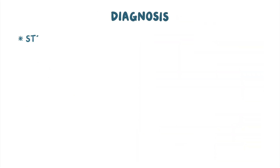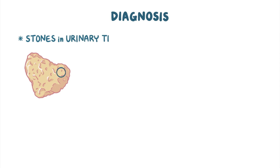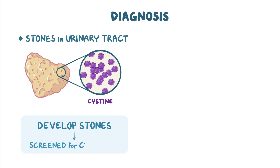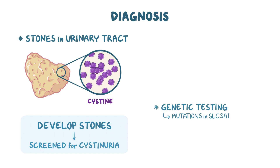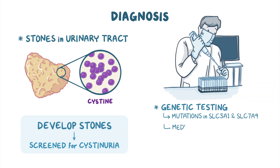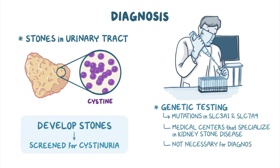A diagnosis is typically made based on finding stones in an individual's urinary tract that are made completely of cysteine, so individuals who develop stones are usually screened for cystinuria. Genetic testing for mutations in the SLC3A1 and SLC7A9 genes is available at medical centers that specialize in kidney stone disease, but is not necessary to confirm the diagnosis.